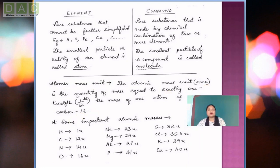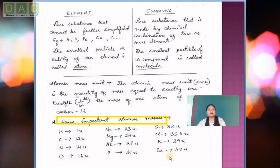We need to know the atomic masses of some important elements. There are 12 elements listed: hydrogen, carbon, nitrogen, oxygen, sodium, magnesium, aluminum, phosphorus, sulfur, chlorine, potassium, and calcium. We need to know at least the atomic masses of these basic elements.